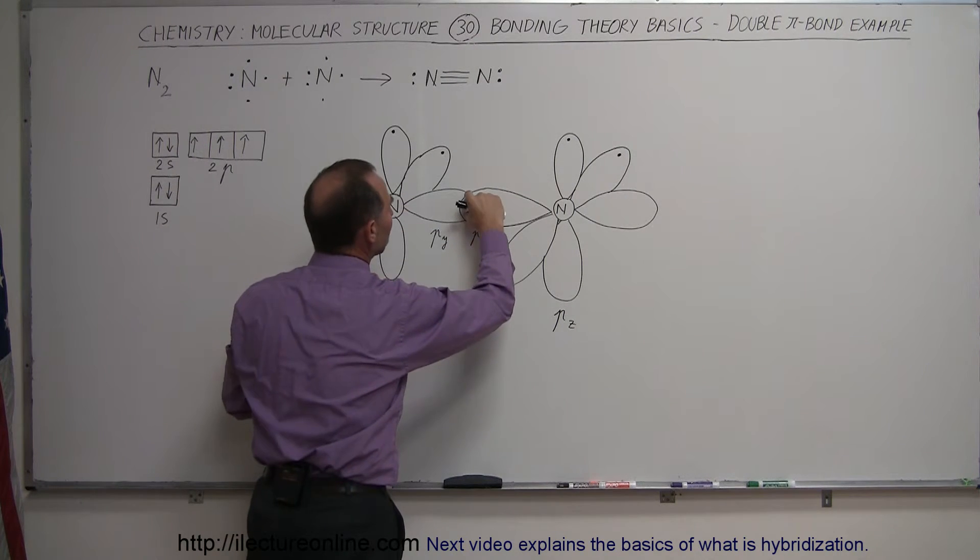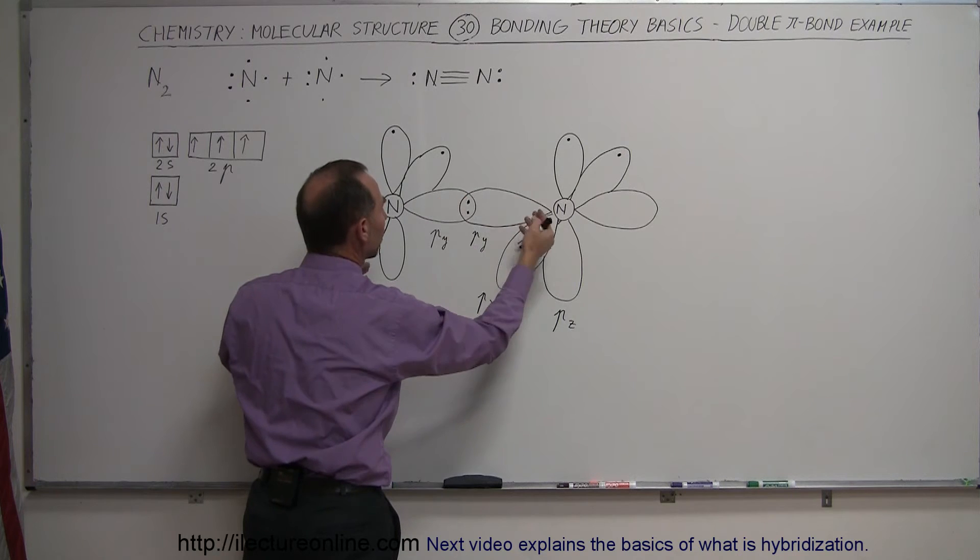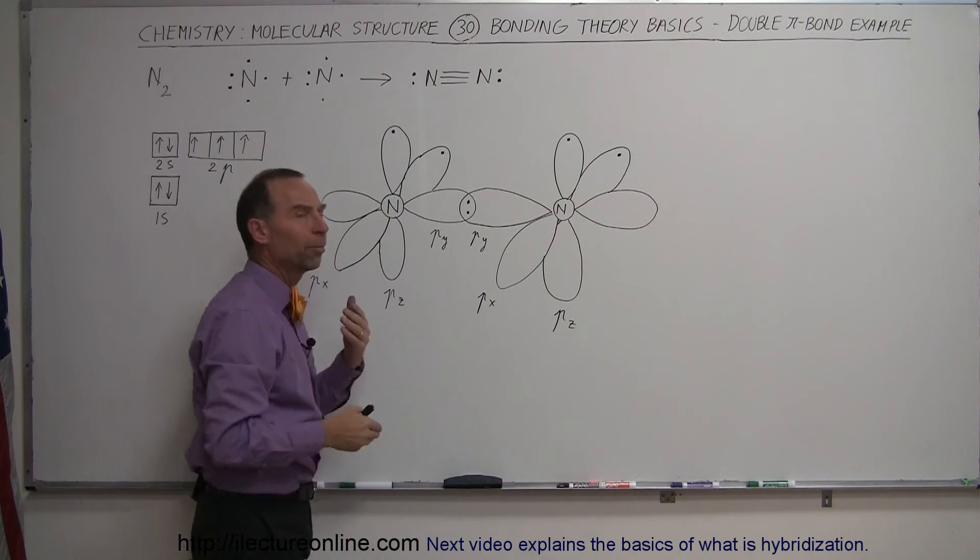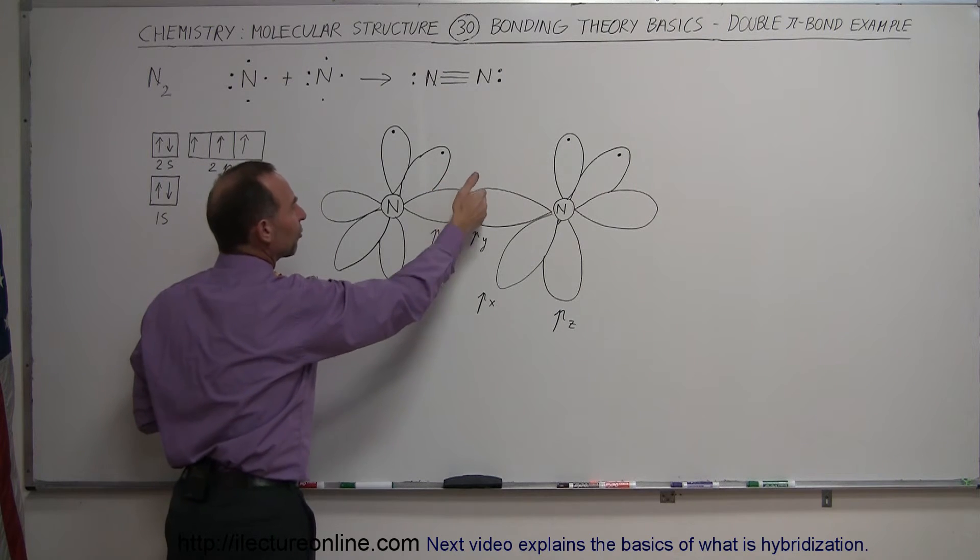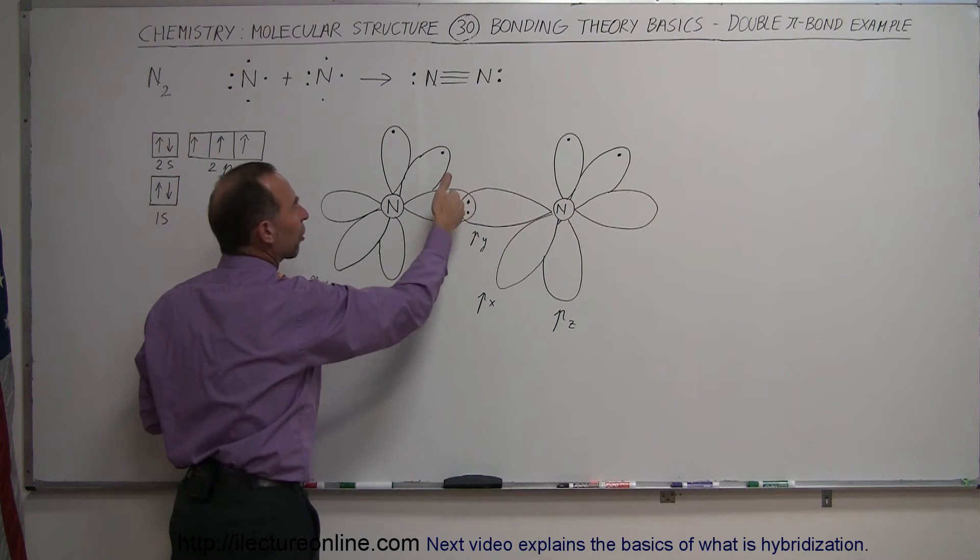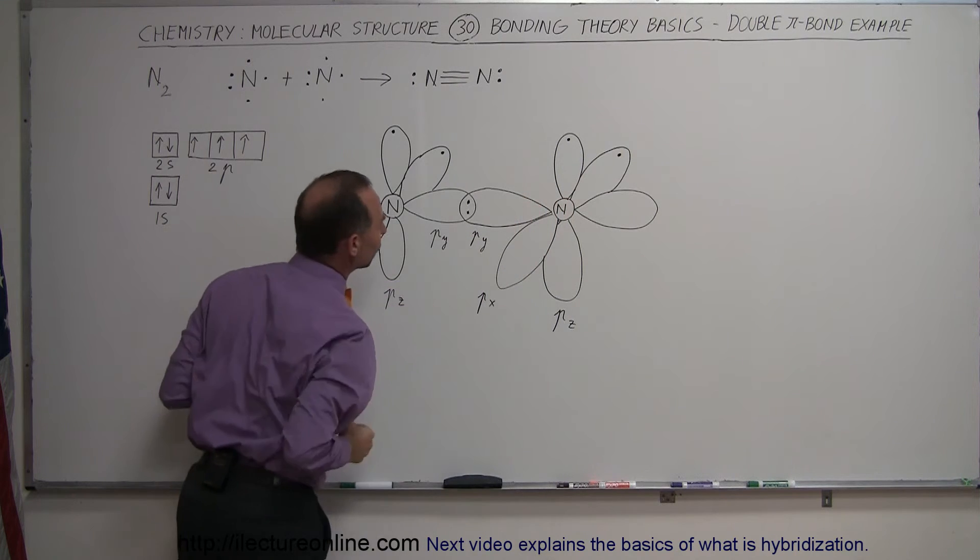will overlap. The single electron in the orbitals will share that space for a significant amount of time, and they will be in phase within that space, creating that negatively charged region and pulling the two nitrogens together.